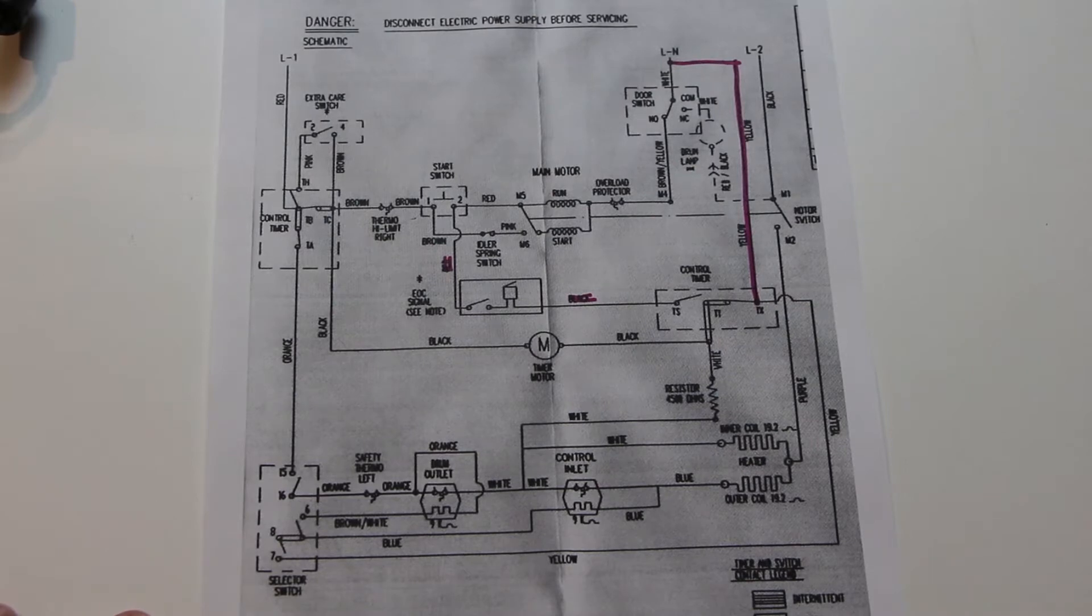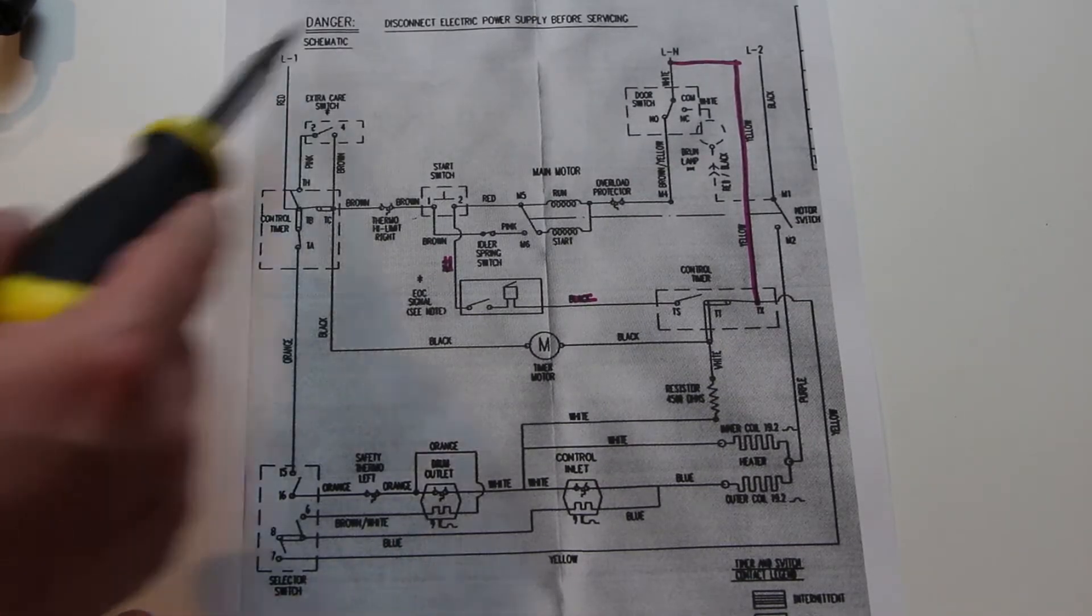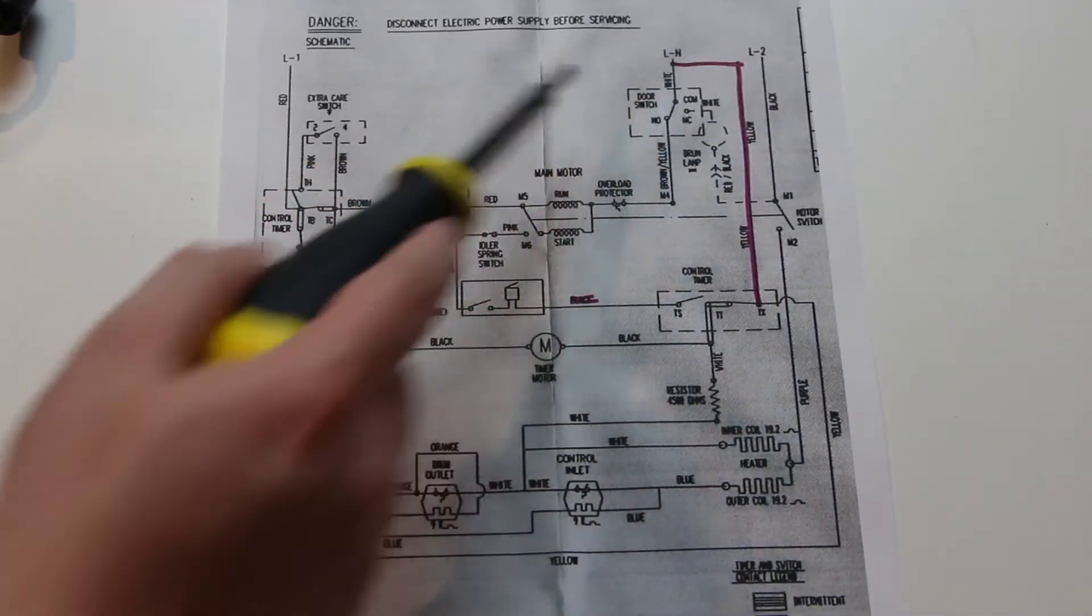So I grabbed a schematic out of the back of it. Starting from the top, we've got the line one, line two, and the neutral coming into it.